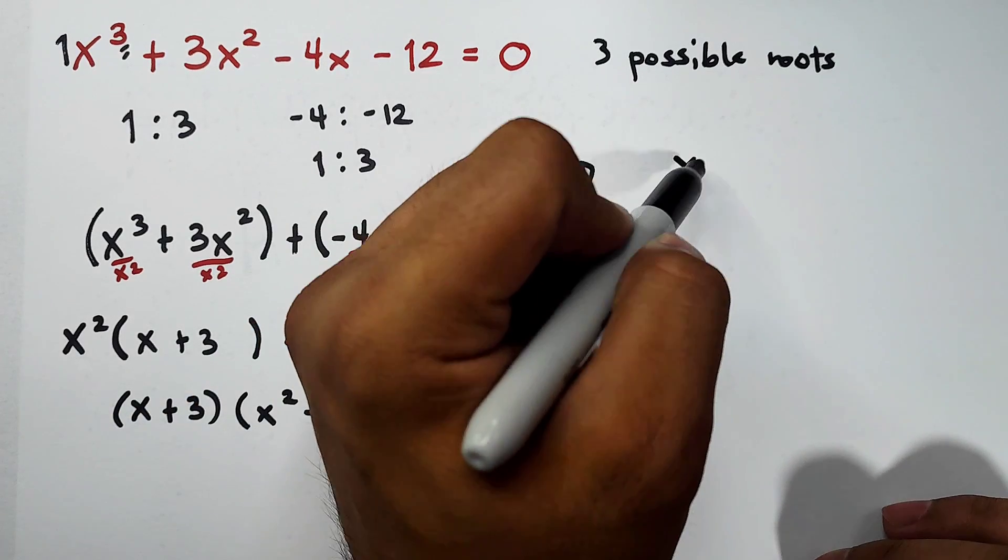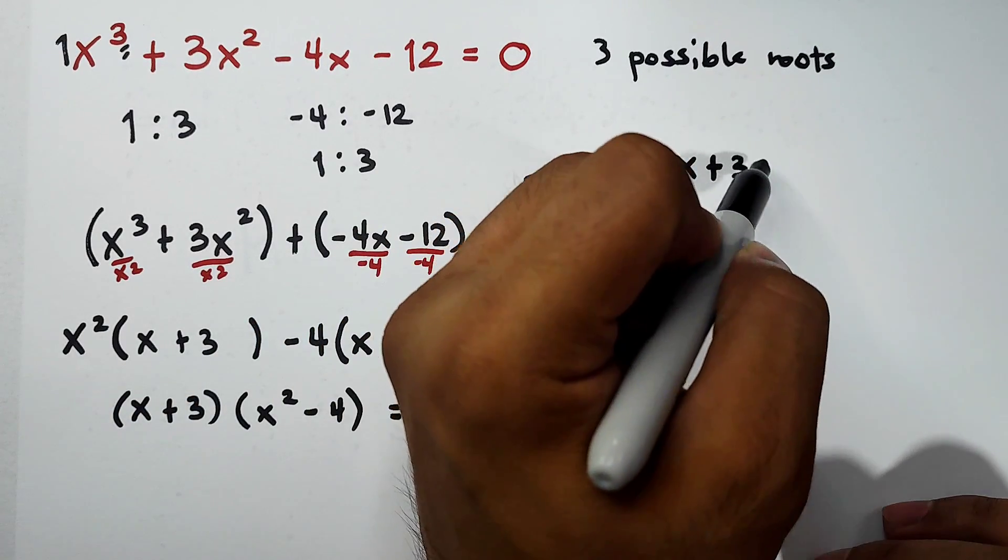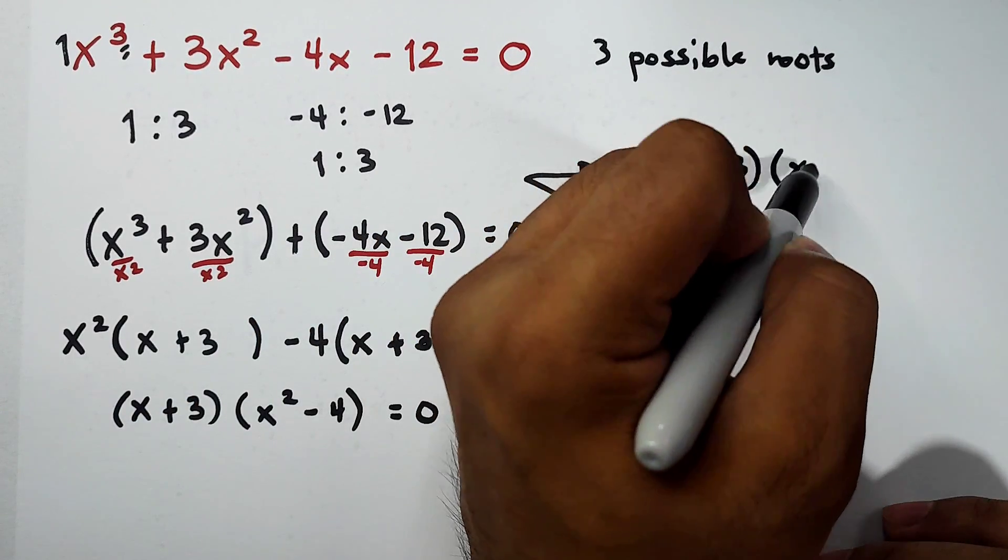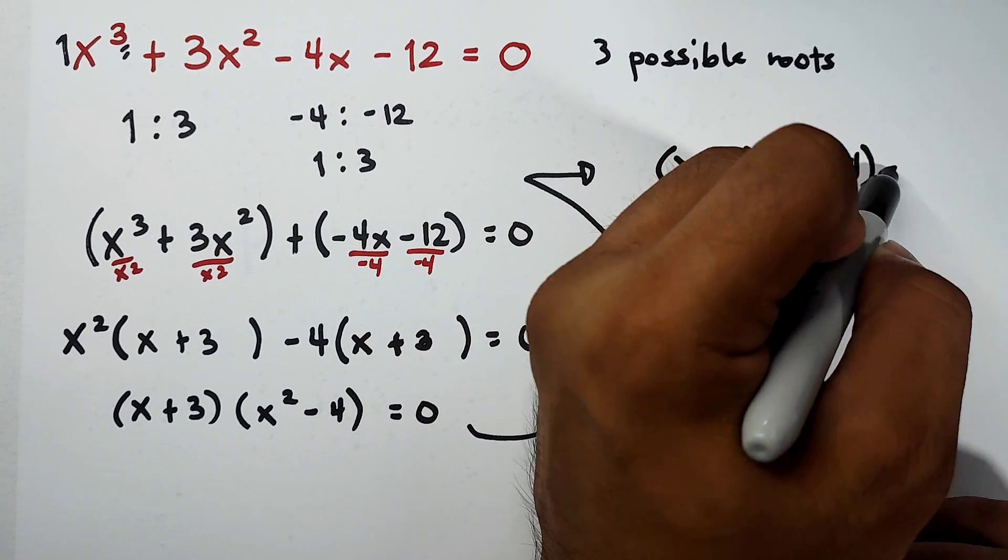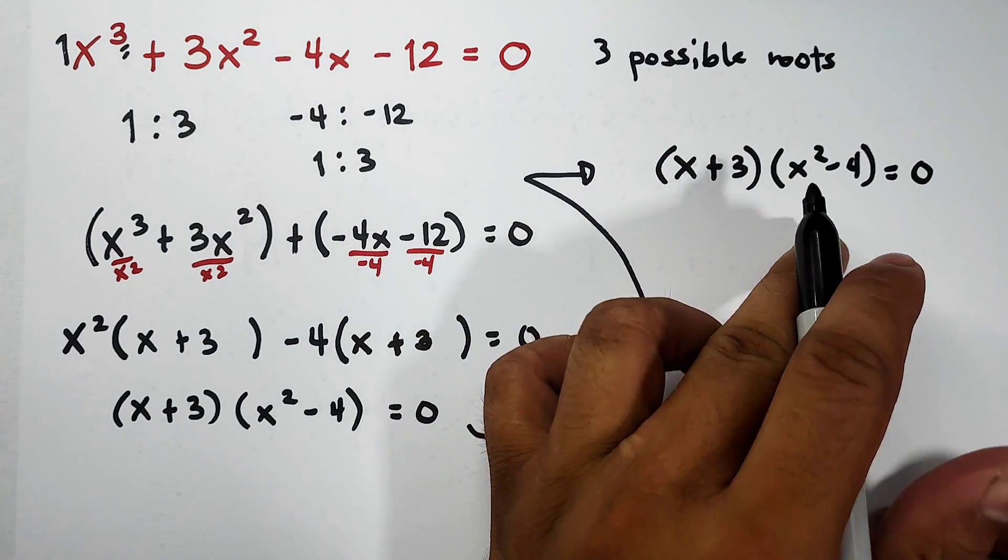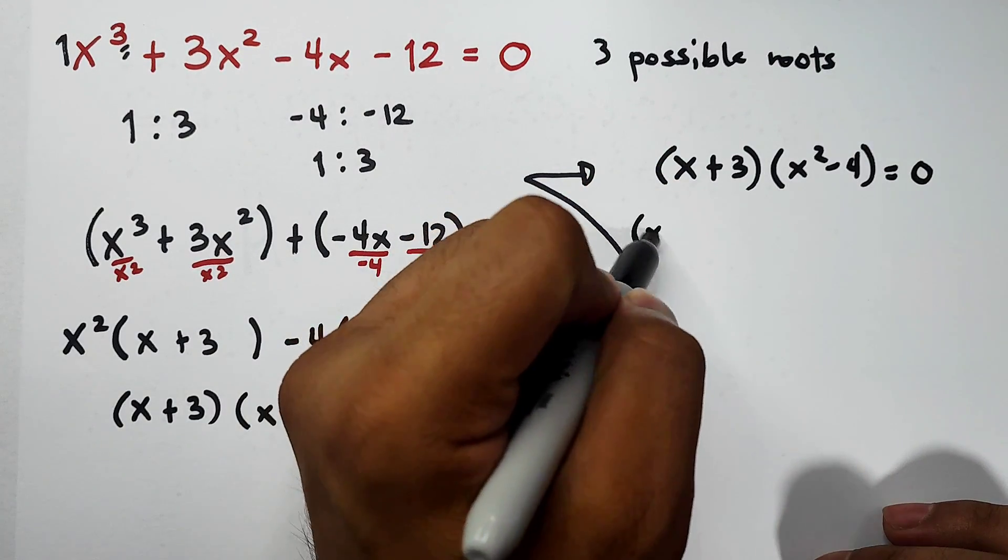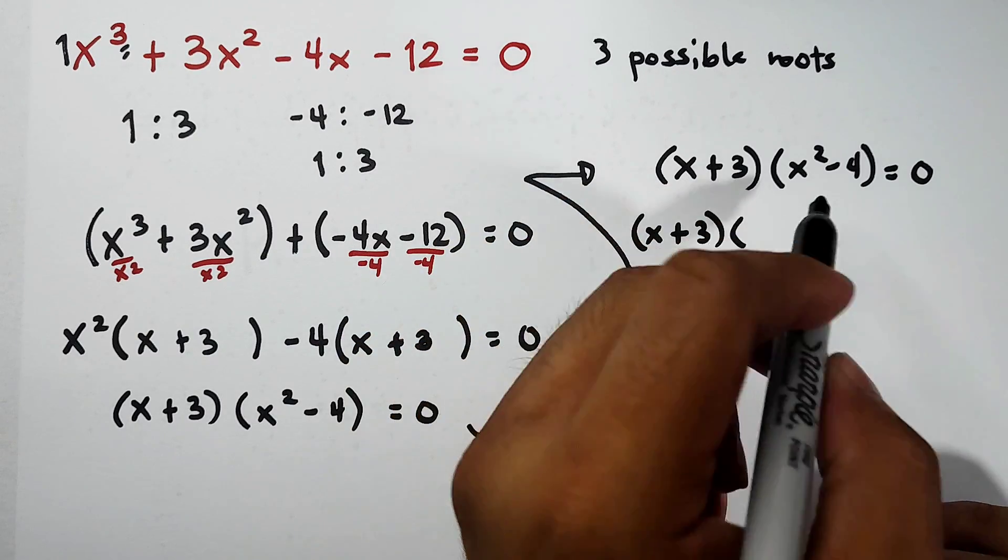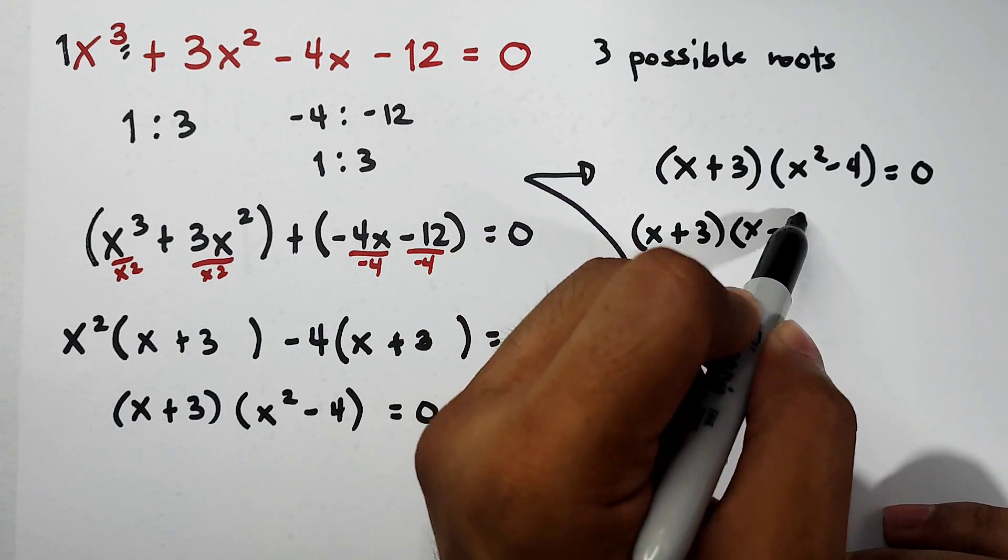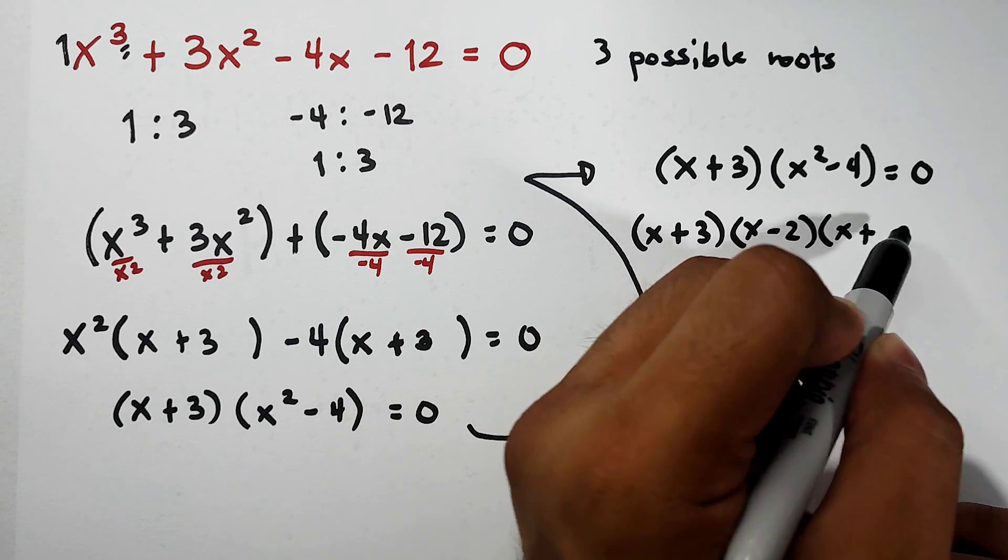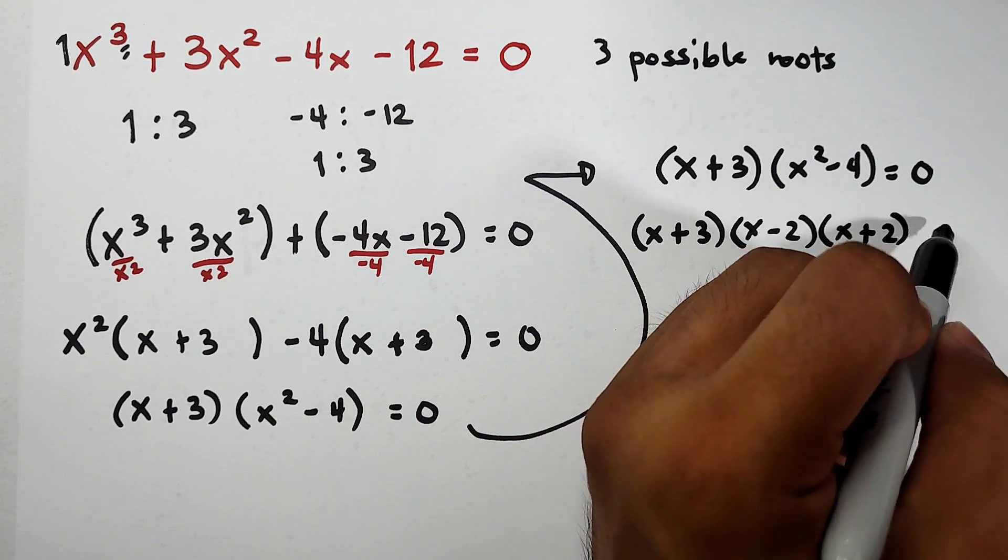Our factor of x squared minus 4 can also be factored out using difference of 2 squares. We have x plus 3, then the factors of x squared minus 4 are x minus 2 then x plus 2. You should know this already, then equal to 0.